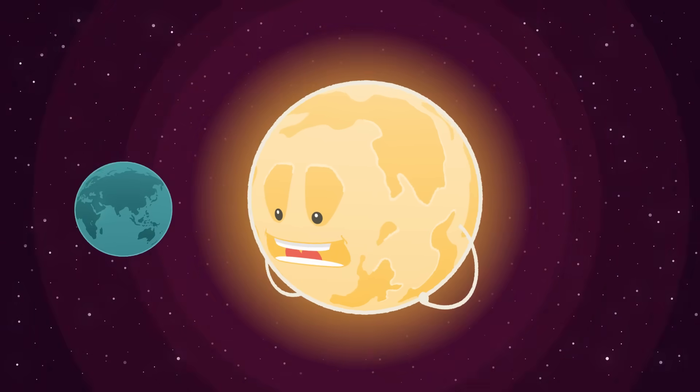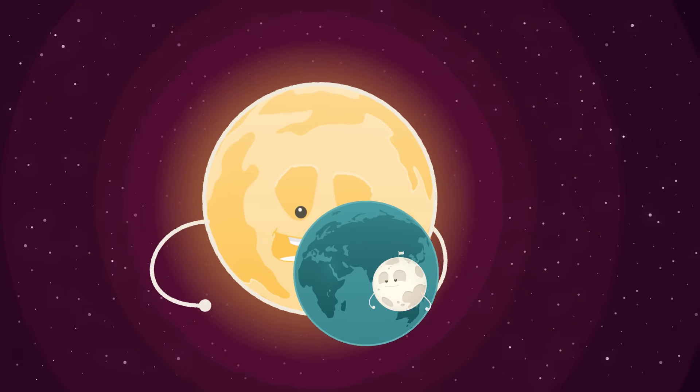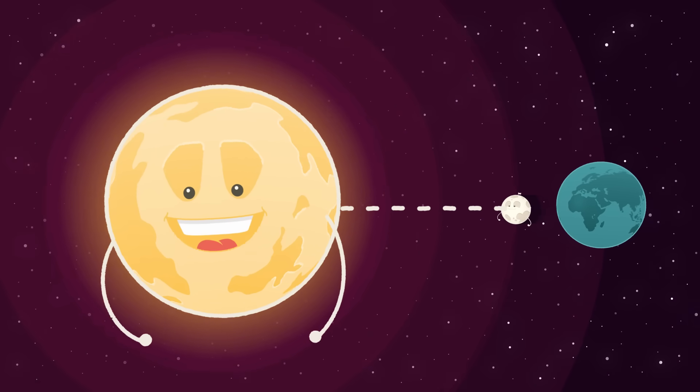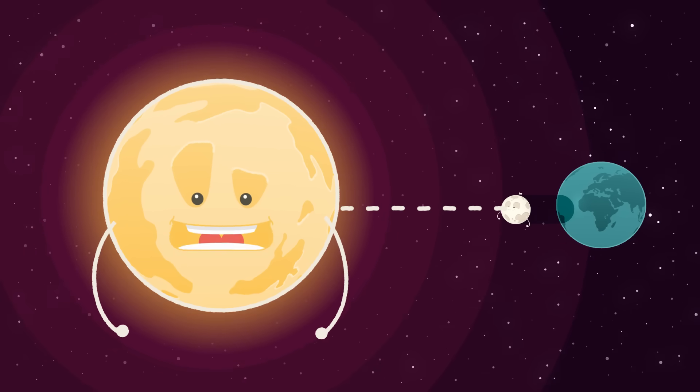Because Earth orbits around me and Moon orbits around Earth, Moon occasionally passes in front of me and blocks out my light to you guys on Earth. That's called an eclipse.